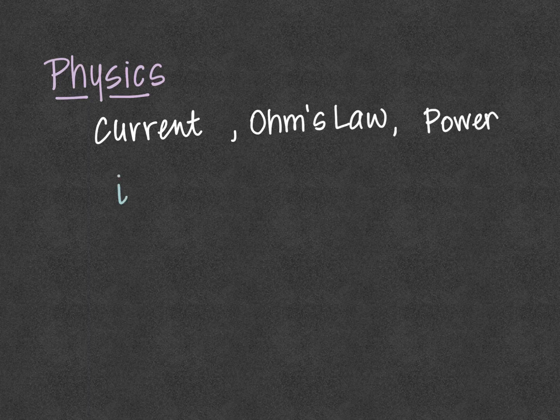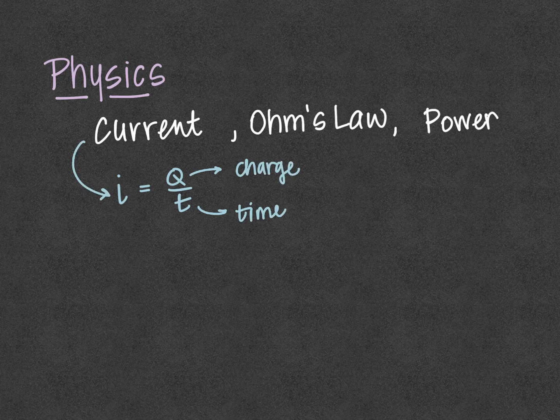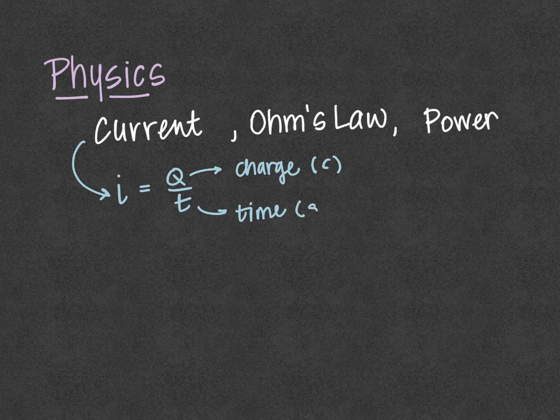First, current is defined as the amount of charge Q per time T. The unit for charge is a coulomb. The unit for time will be seconds.